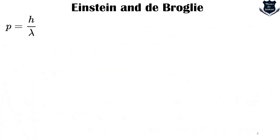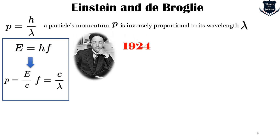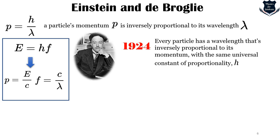The de Broglie relation P equals H upon lambda says that a particle's momentum P is inversely proportional to its wavelength lambda. For photons, this relation is straightforward as a consequence of E equals HF, since a light wave has P equals E upon C and we can tell that F equals C upon lambda where C is the speed of light. But in 1924, Louis de Broglie proposed that every particle has a wavelength that is inversely proportional to its momentum with the same universal constant of proportionality, which is H.